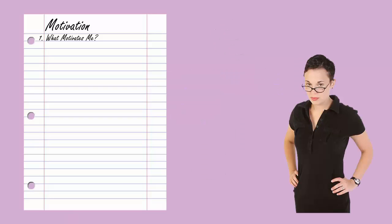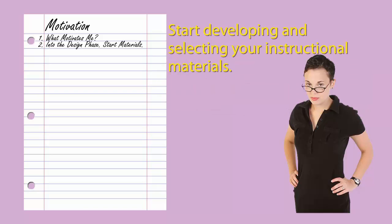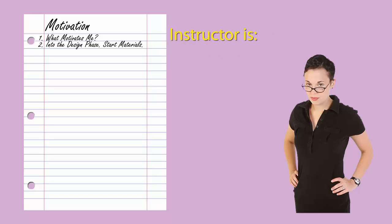If you've gone through the prior lectures, you've been following the systematic approach to instructional design. You've been following the ADDIE path of design, and you've been through the analysis phase of the model and recently completed the design phase. You're now moving into the development phase of the model, where you're going to actually start developing and selecting your instructional materials. During this phase, we begin to think of the instructor as the motivator, the presenter, the leader, and the evaluator of the instruction.